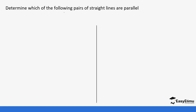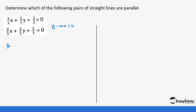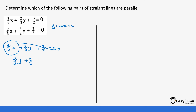Let's do another example: determine which of the following pairs are parallel. You notice these equations are not in the form y = mx + c, so we have to rearrange them step by step. We have (3/2)x + (2/3)y + (3/2) = 0. We move the x term to the other side: (2/3)y + (3/2) = -(3/2)x. Then we move the (3/2) constant to the other side: (2/3)y = -(3/2)x - (3/2).